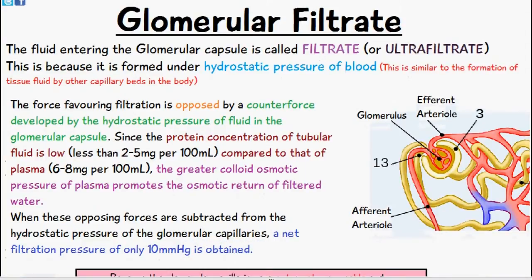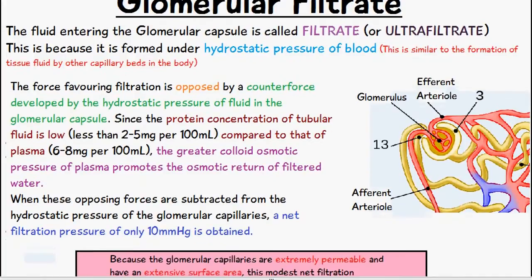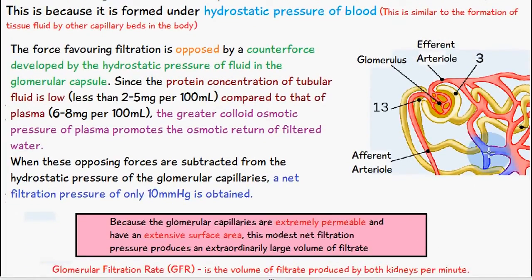As you can see there is a very low filtration pressure but what we need to understand is the glomerular capillaries are very permeable and they have a very great surface area. Despite the filtration pressure only being 10 millimeters of mercury, since the surface area is so large and the glomerular capillaries are generally quite permeable, it means we have a large volume of filtrate which is produced.